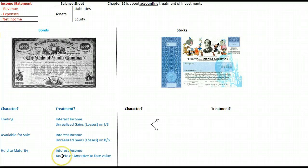But we will accrete or amortize to face value. So if we bought this bond for $900, over time we'll accrete that thing up until it has a $1,000 face value at the time of maturity. That's a topic for a much more advanced accounting class, but just to be complete, included here.